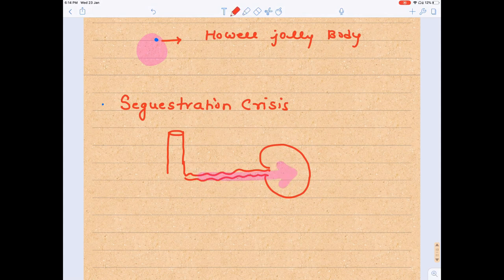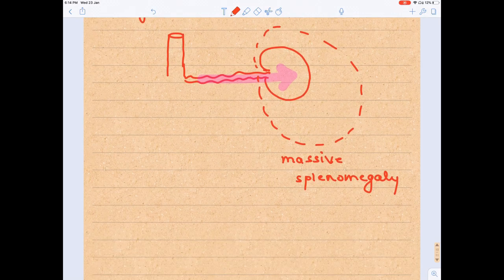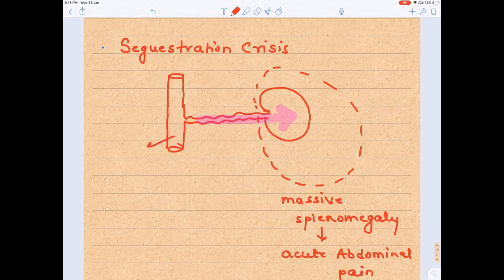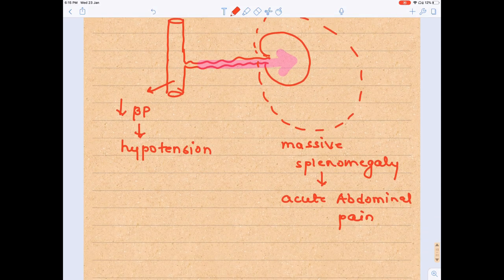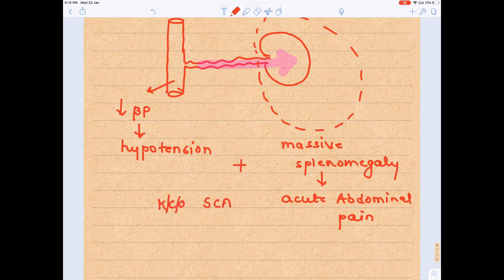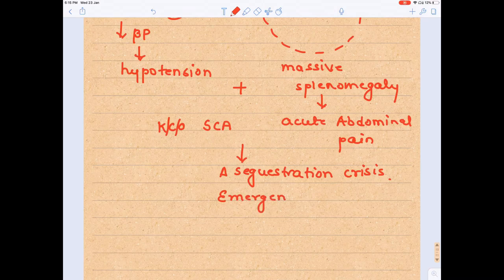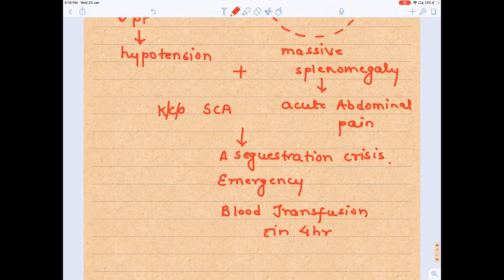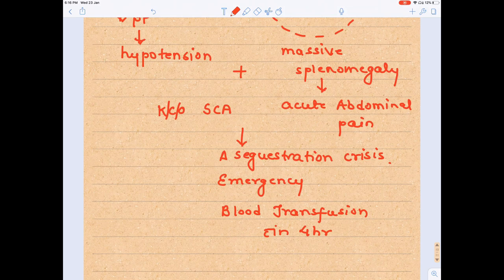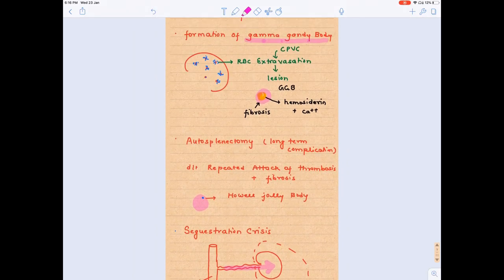Third important feature: sequestration crisis, which is the most severe complication of sickle cell anemia. What happens is that large amounts of blood are pushed into the spleen, which leads to massive splenomegaly. Due to enlarged spleen, there will be acute abdominal pain localized to the upper left quadrant. All the blood is gone to spleen, so blood pressure will be going down. There will be hypotension, patient will feel dizzy. So in a known case of sickle cell anemia, if there is hypotension, massive splenomegaly, and abdominal pain, think of sequestration crisis, which is an emergency. You have to give blood transfusion within four hours. Otherwise, you may lose the patient. Sequestration crisis, the most severe complication of sickle cell anemia.